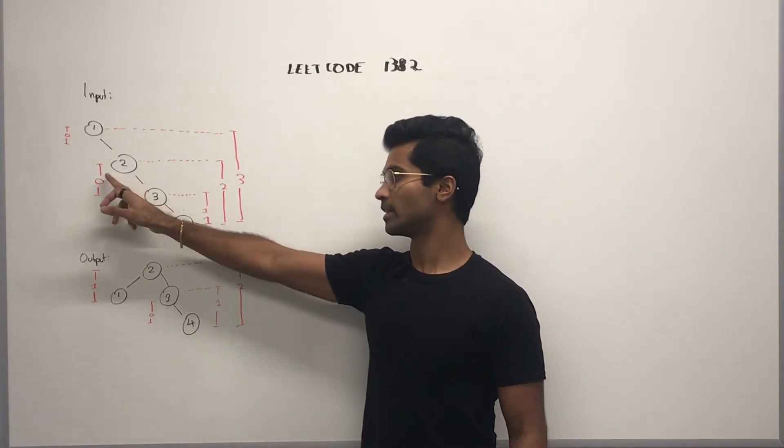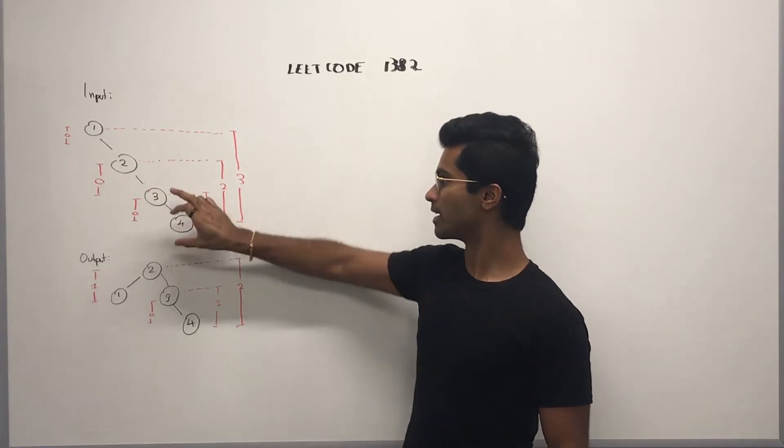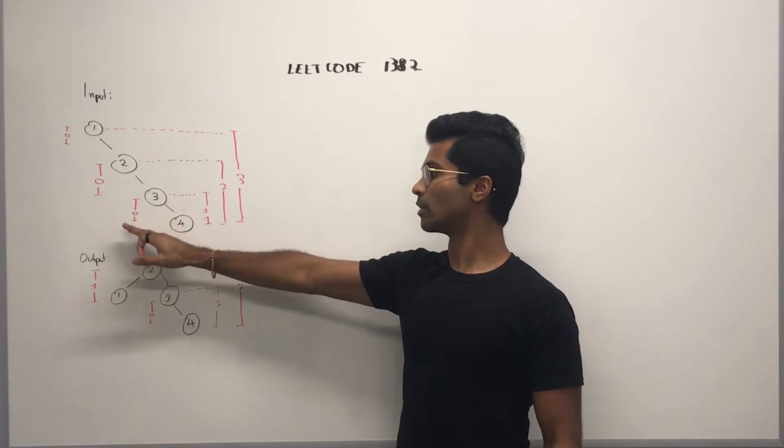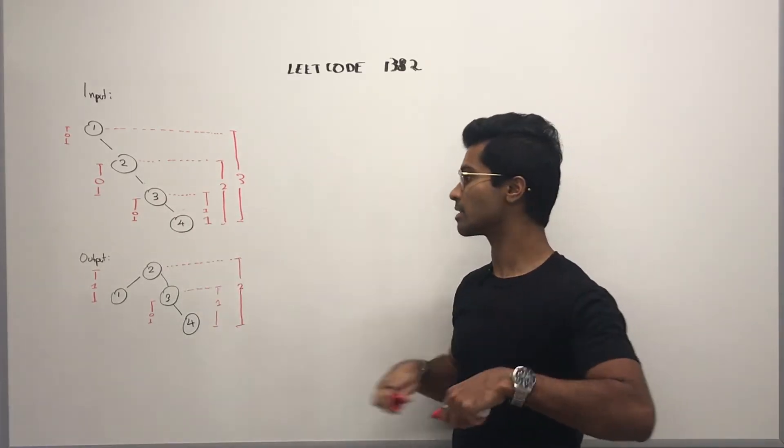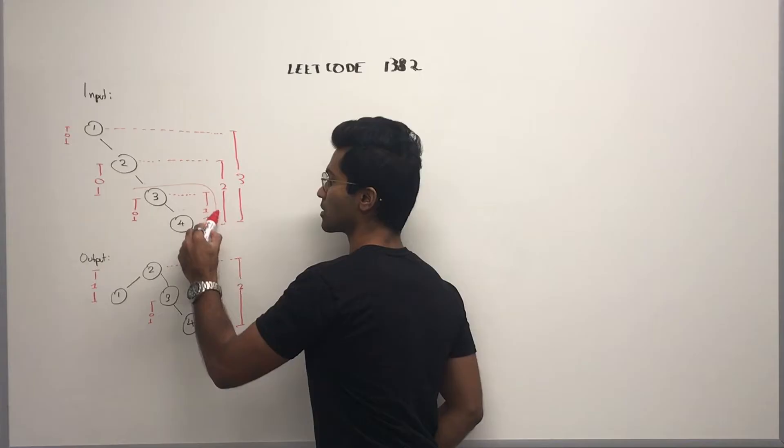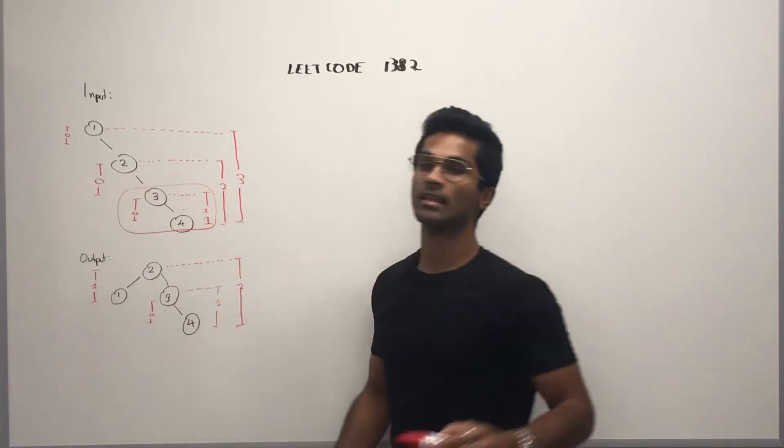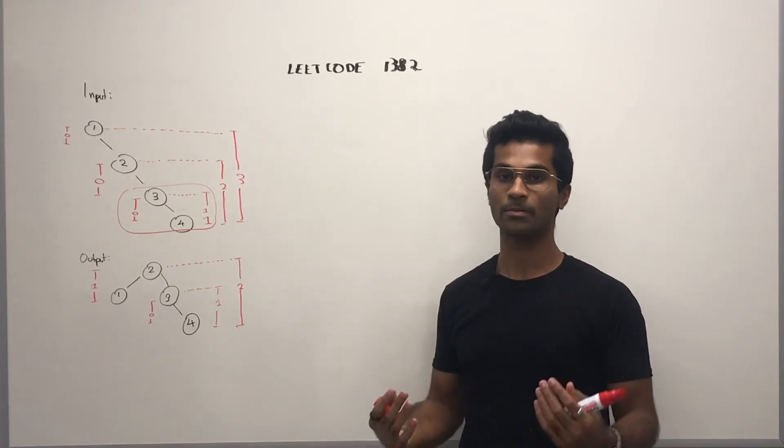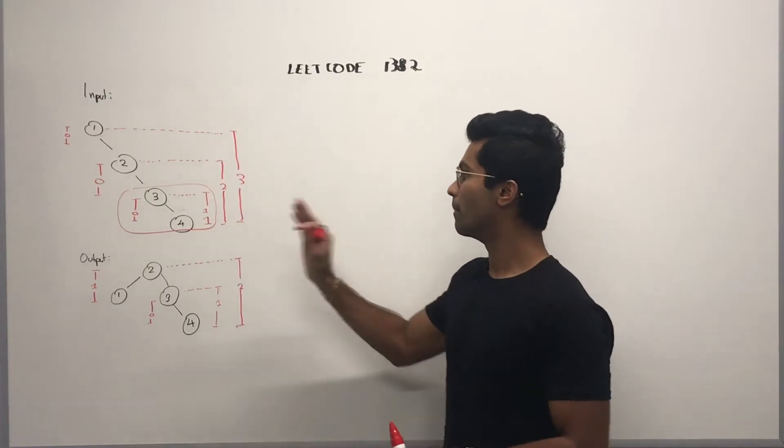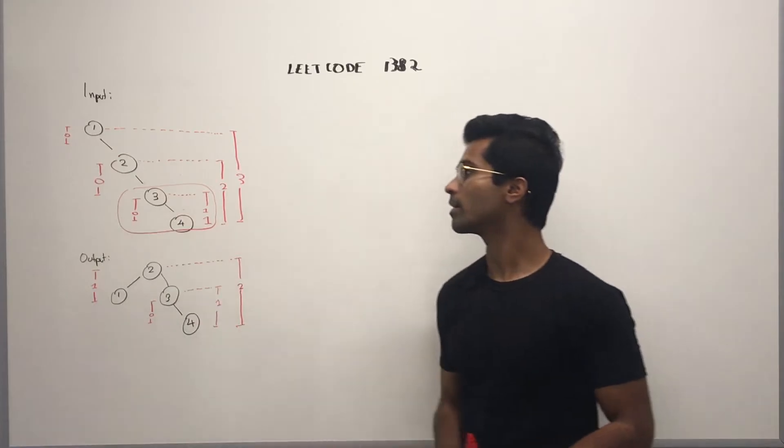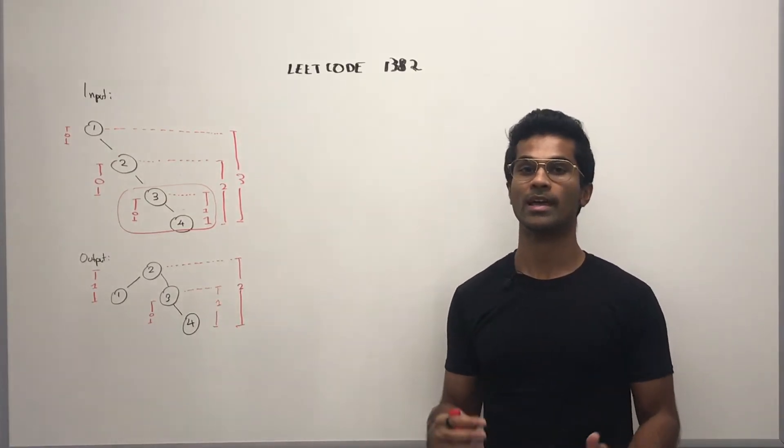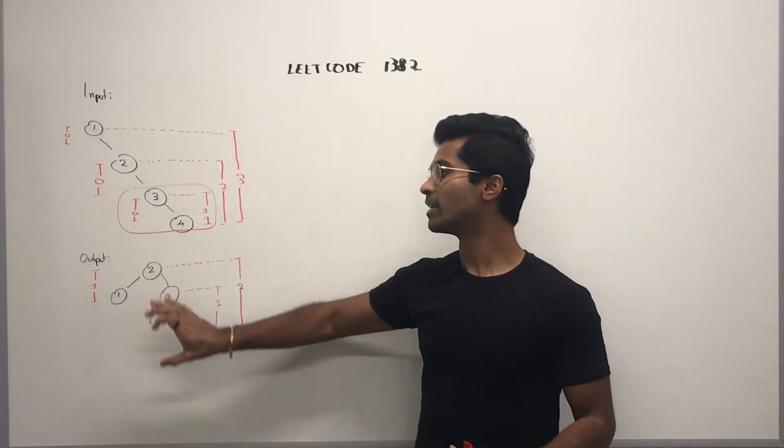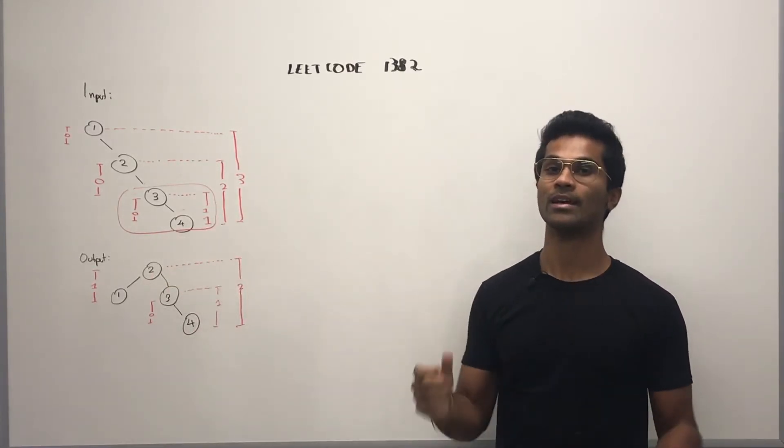Similarly for two, it has a left null but its right has a depth of two. Similarly for three, it has a left null but a right depth of one. Now this case is valid because the left and right subtree have a difference in depth of one. But because of two and because of one, this is going to be an unbalanced binary search tree. Our job is to take this and give an output where we have the nodes as balanced.